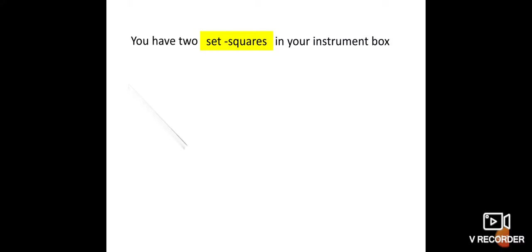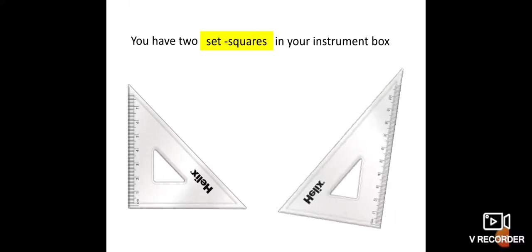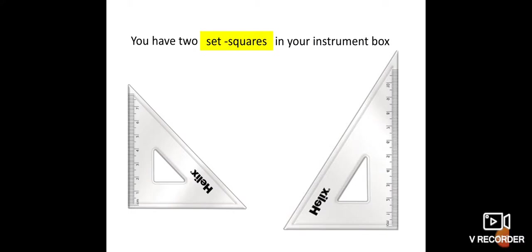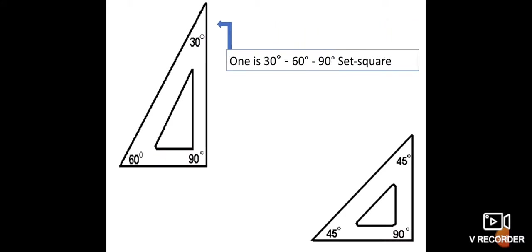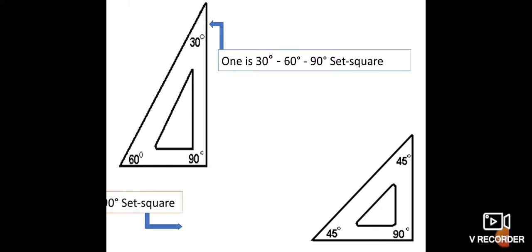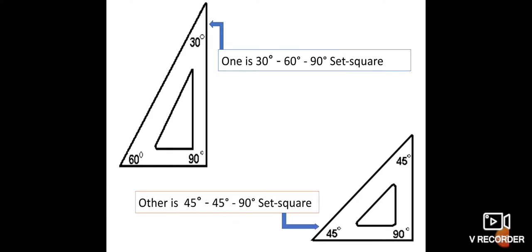Let's see some names of quadrilaterals. You have two set squares in your instrument box. When you open your instrument box, there are a scale, protractor, compass, and two set squares. One set square has 30°, 60°, and 90° angles. The second one is a 45°, 45°, 90° set square.